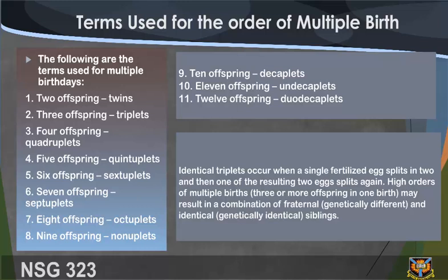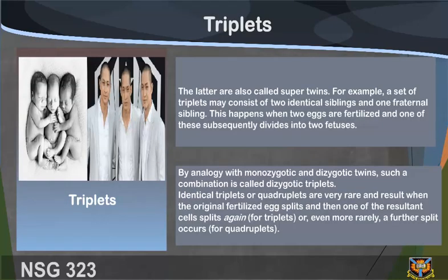Identical triplets occur when a single fertilized egg splits in two and then one of the resulting two eggs splits again. Higher orders of multiple births — three or more offspring — may result in a combination of fraternal (genetically different) and identical (genetically identical) siblings; these are also called super twins. For example, a set of triplets may consist of two identical siblings and one fraternal sibling.